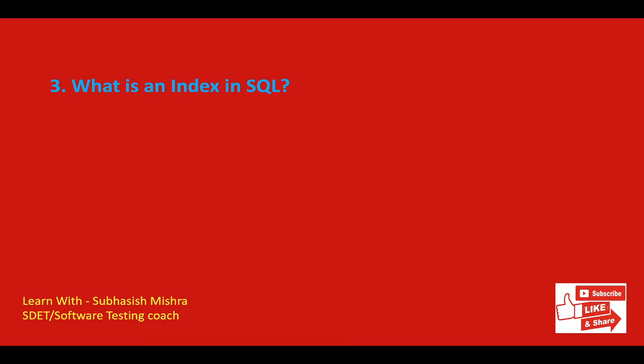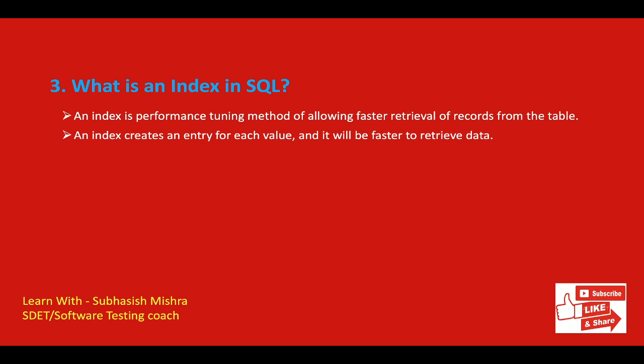What is an index in SQL? Indexes are used to retrieve data from the database more quickly. The user cannot see indexes. An index creates an entry for each value and is used to speed up the performance of queries. For example, if you want to refer to all pages in a book that discuss a certain topic, you refer to the index, which lists all topics alphabetically, and you can go to specific page numbers. The same concept is used in SQL for index, and that's why it improves the performance of queries.